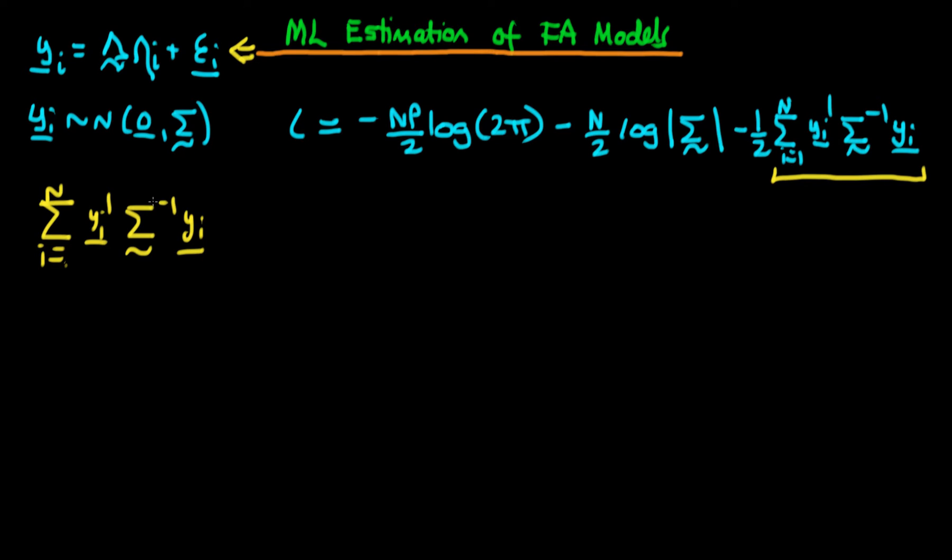The first thing we're going to do here is a bit of a trick. Because this expression here is actually scalar, the trace of a scalar is just the original scalar. So we can replace this by the sum from i equals 1 to n of the trace of yi transposed times the inverse of sigma times yi.